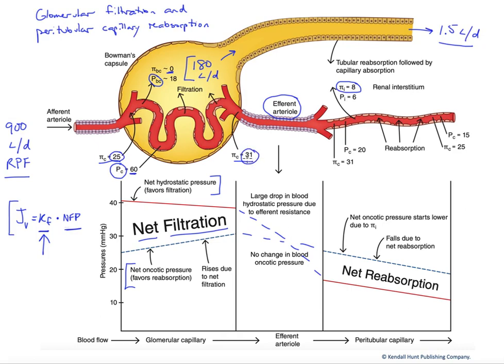But in addition, look at our PC, our capillary hydrostatic pressure fell dramatically. And so now what we have is a dominant blood oncotic pressure driving net reabsorption across those, again, fenestrated capillaries, driving massive reabsorption of almost the entirety of this 180 liters a day. We're going to reabsorb 178.5 of those liters to generate our 1.5 liters per day of urine flow.